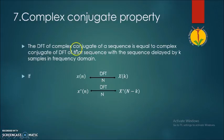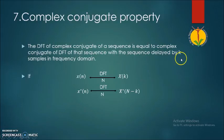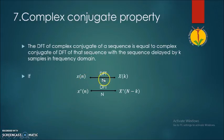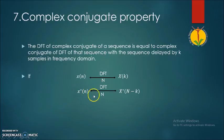The seventh property is the complex conjugate property. The DFT of the complex conjugate of a sequence is equal to the complex conjugate of the DFT of that sequence with the argument delayed by k samples in the frequency domain. So if x(n) has N-point DFT X(k), then the DFT of x*(n) is X*(−k), which is the DFT delayed by k samples.